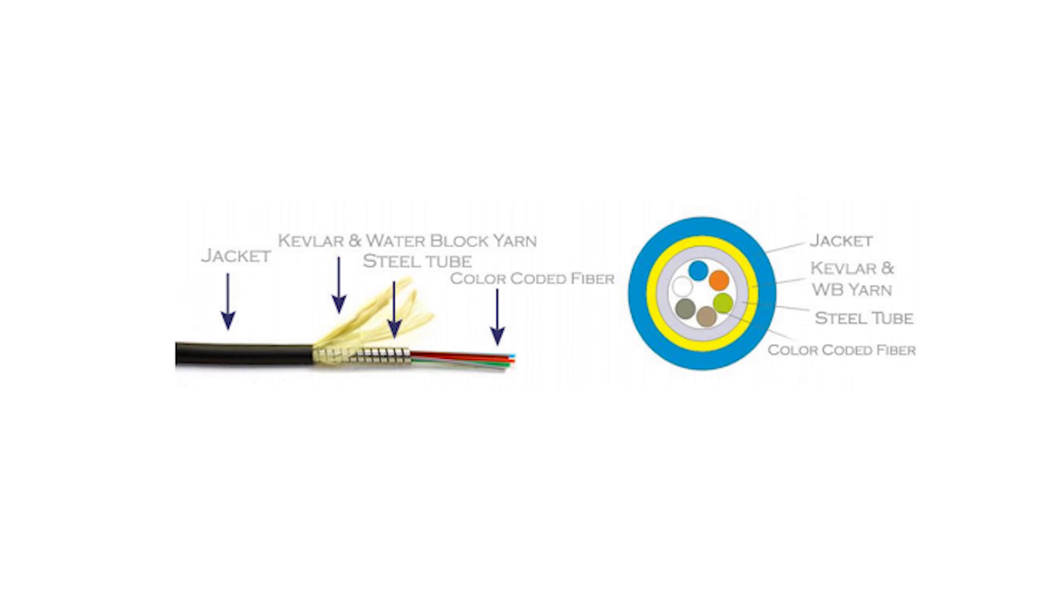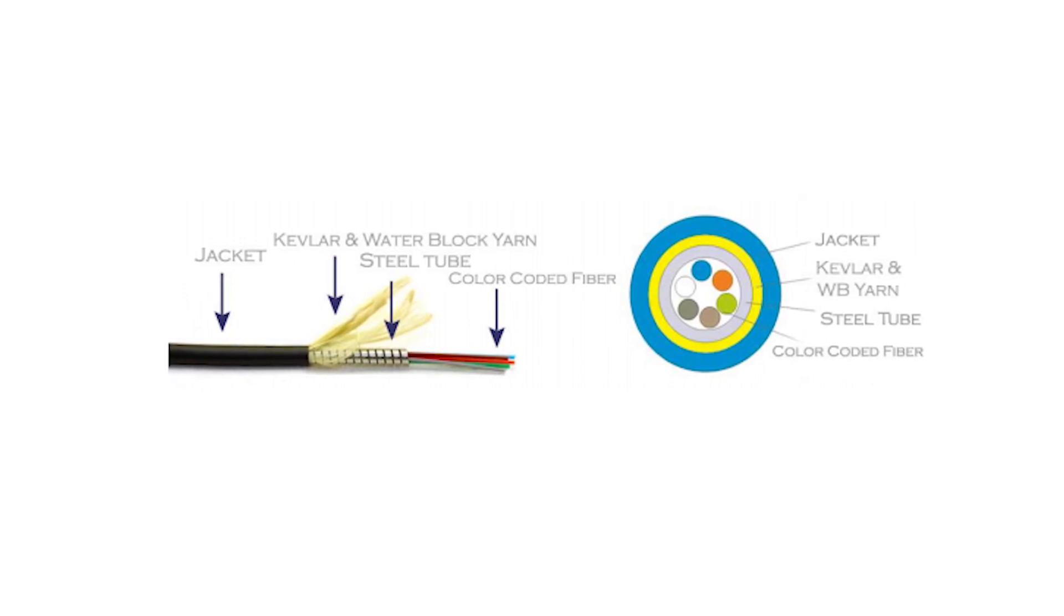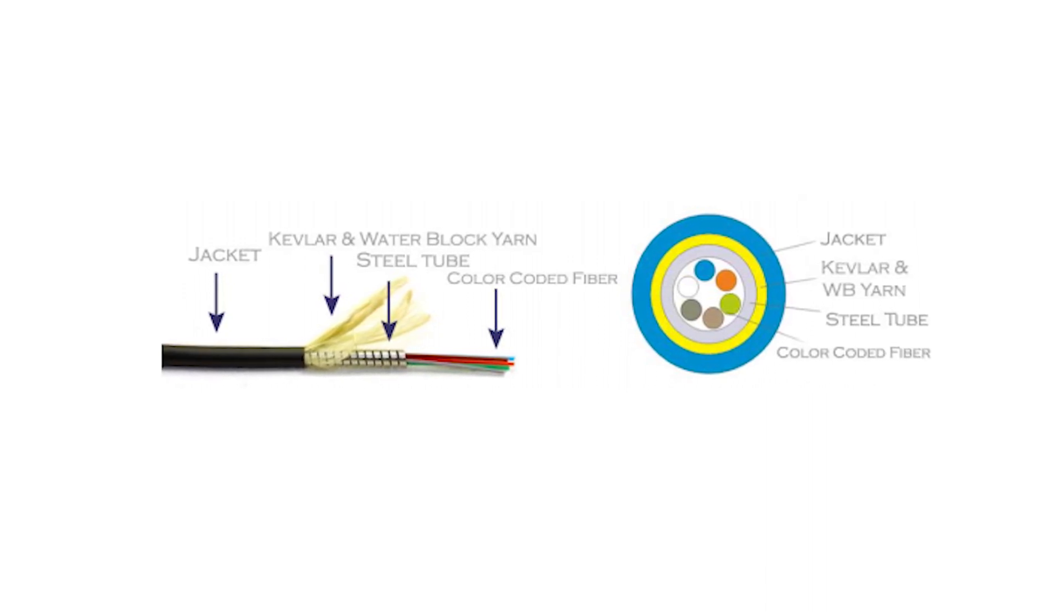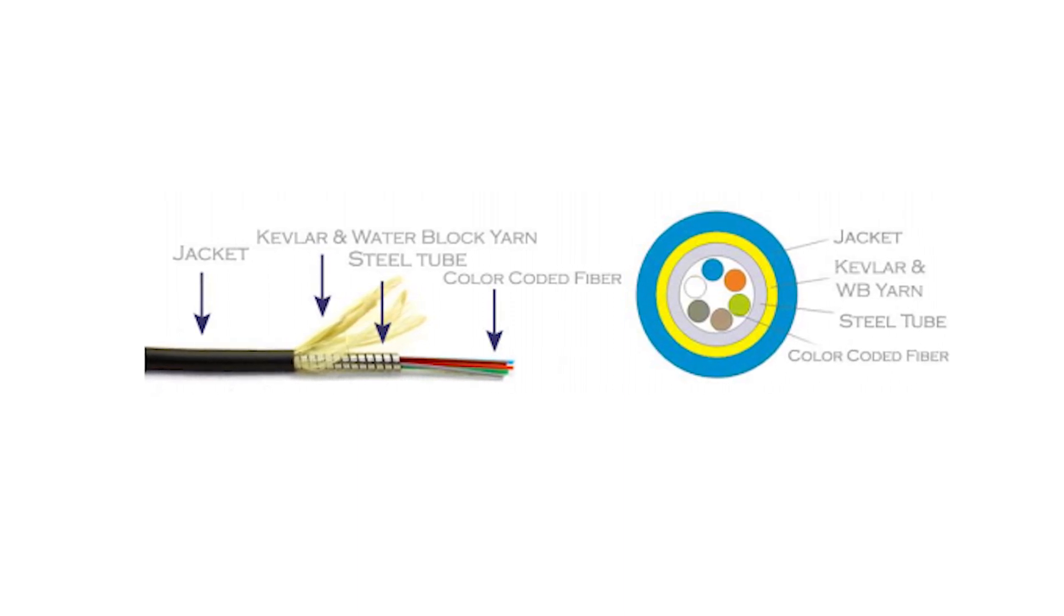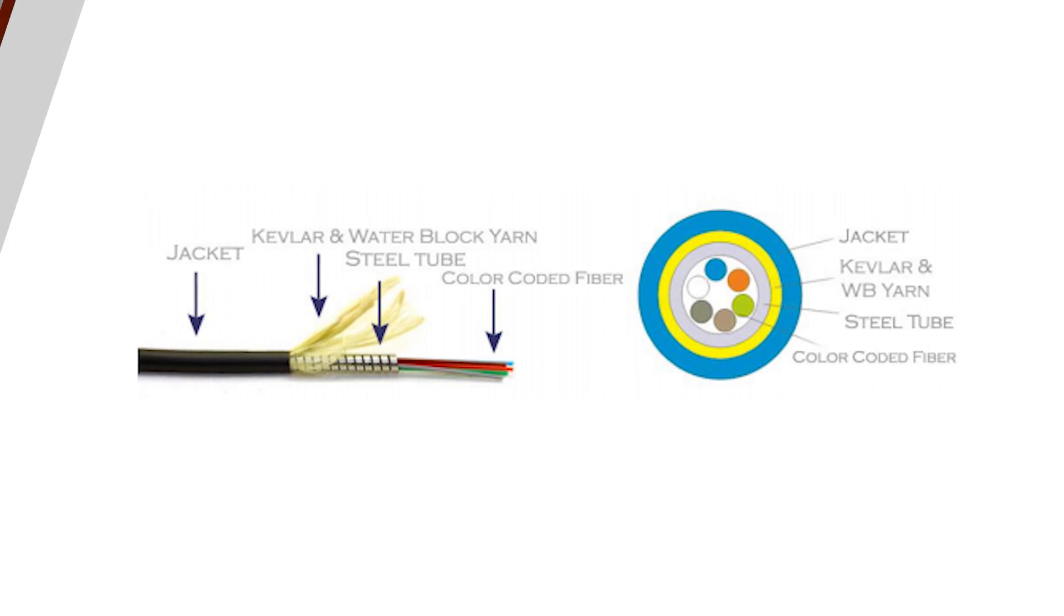We also offer a micro armor direct burial option. This assembly utilizes a stainless steel spiraling technology which gives it the smallest outer diameter of any armored fiber, making routing and installation faster and easier.